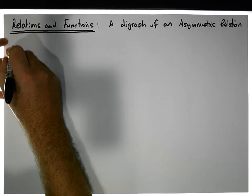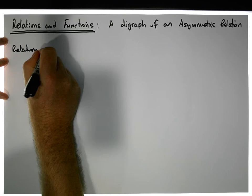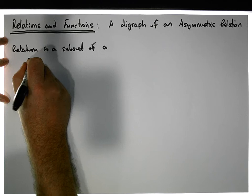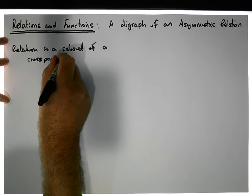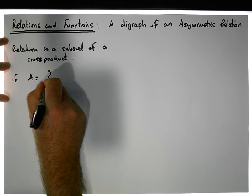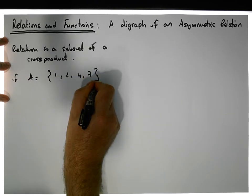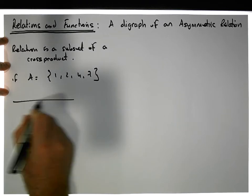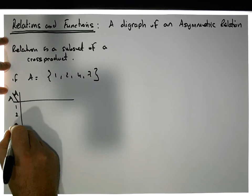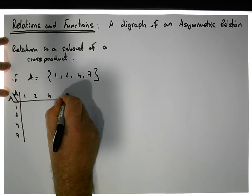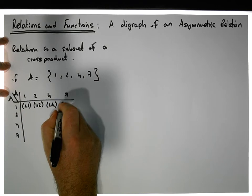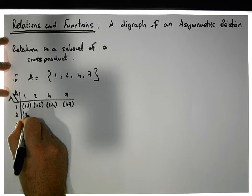Let's keep in mind what a relation is. A relation is a subset of a cross product. So a relation on a set is simply a subset of a cross product. If A is the set containing the values 1, 2, 4, and 7, then we can construct A cross A.